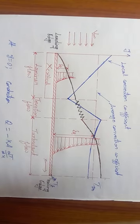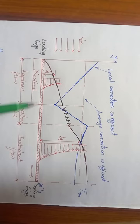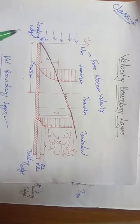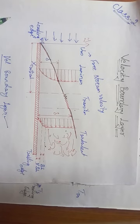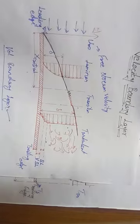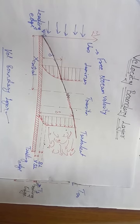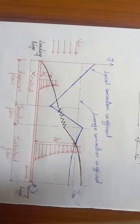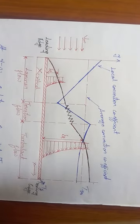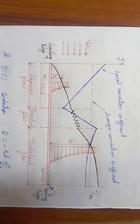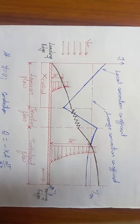In a single statement: wherever you get dt/dy as noticeable, that defines the thermal boundary layer. Where dv/dy is noticeable, that defines the velocity boundary layer. So delta is where dv/dy is noticeable; delta_t is where dt/dy is noticeable.